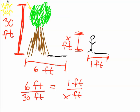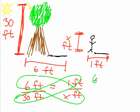And then we simply just cross multiply the six and the x. We cross multiply that. And we cross multiply the 30 and the one. So it's 6x equals 30. Divide both sides by 6 to get x by itself. And x equals 5.